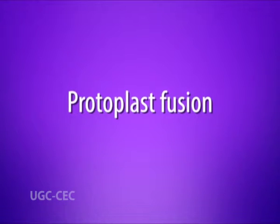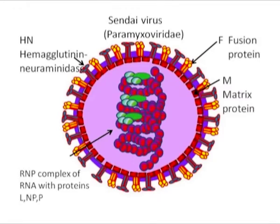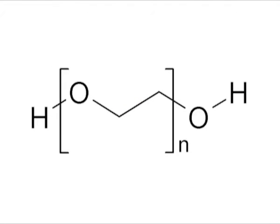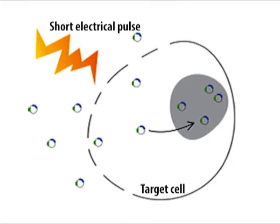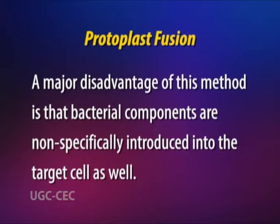Next is protoplast fusion. It is a technique in which transformed bacterial cells are treated with lysozyme in order to remove the cell wall. Following this, fusogenic agents — for example, Sendai virus, polyethylene glycol, or electroporation — are used to fuse the protoplast carrying the gene of interest with the target recipient cell. A major disadvantage of this method is that the bacterial components are non-specifically introduced into the target cell as well.